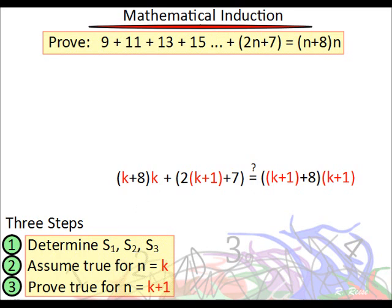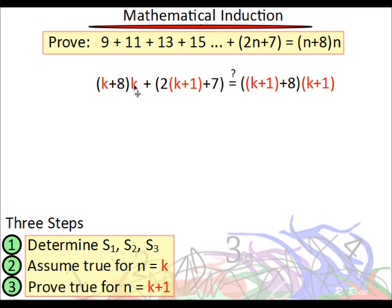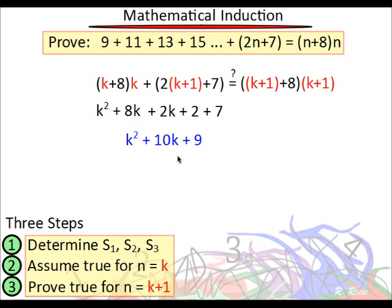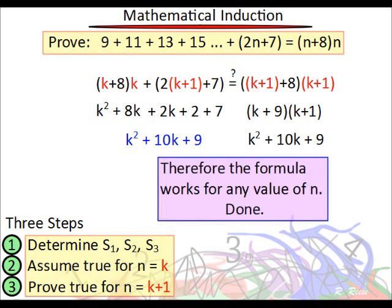Okay, so let's see if we can do that. Let's first simplify the left-hand side. This gives us k squared plus 8k. This gives us 2k plus 2 plus 7. Collecting like terms, you get k squared plus 10k plus 9. Now, a word of note: you are not to treat this like an equation, so you don't subtract from both sides or anything like that. This is a proof, which means you work each side independently, and eventually you want to show that the left side equals the right. So now let's do the same thing to the right-hand side. This is k plus 9. Multiply this together — FOIL — and we get k squared plus 10k plus 9. Same thing. Therefore, the formula works, and we are finished.